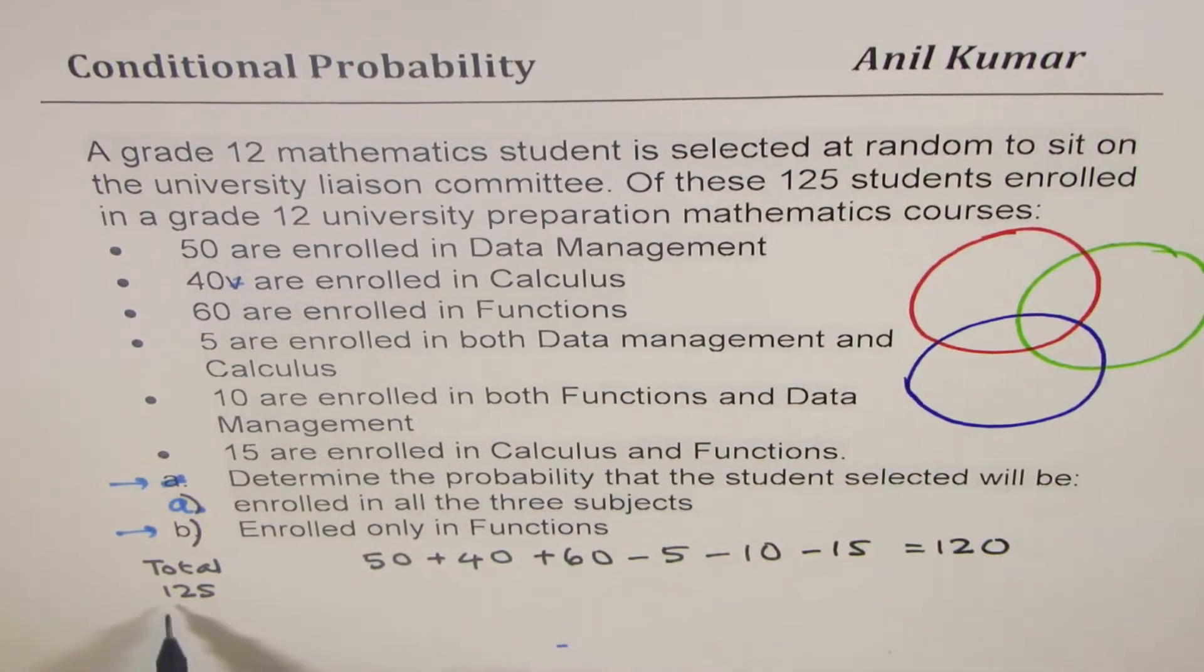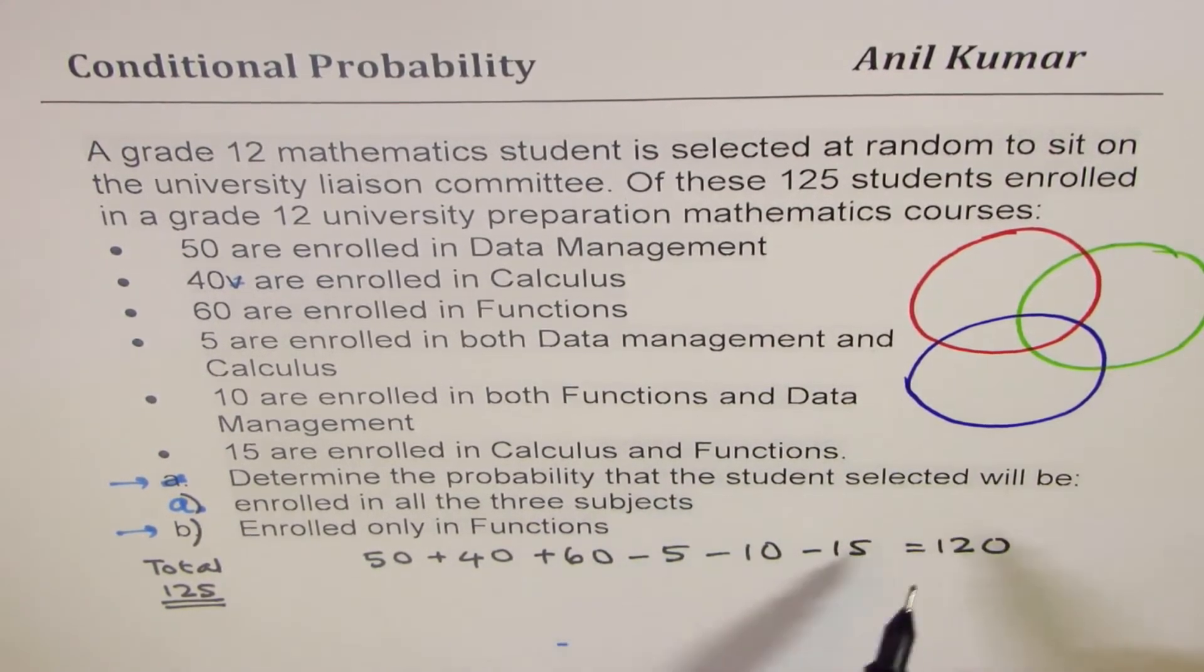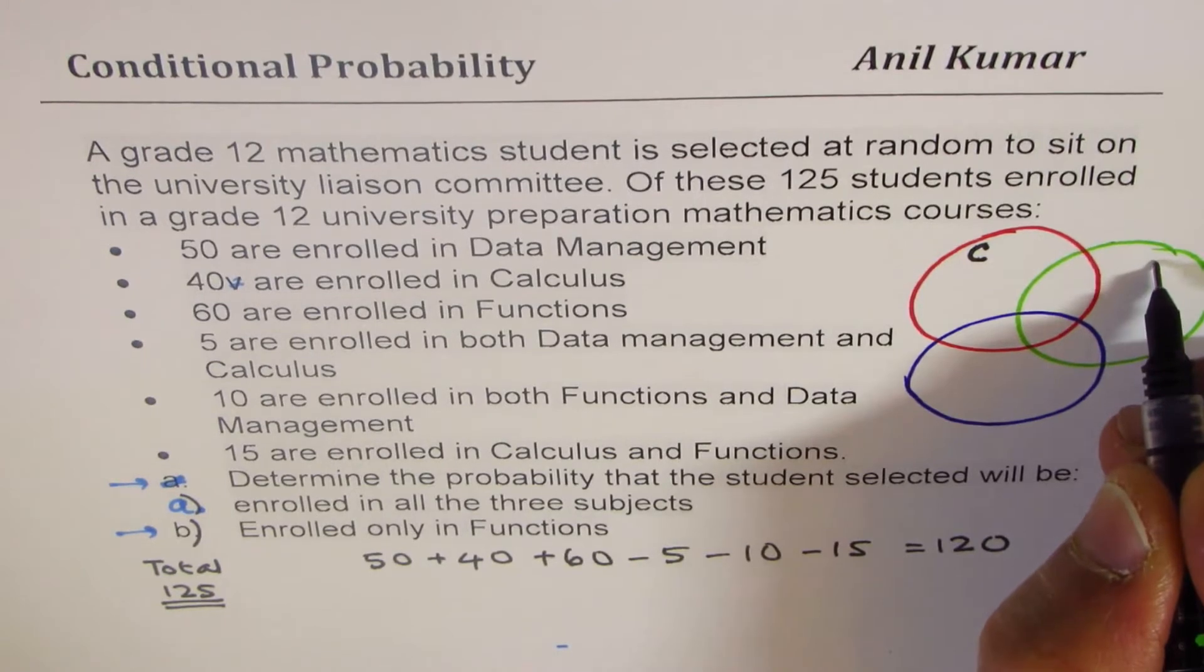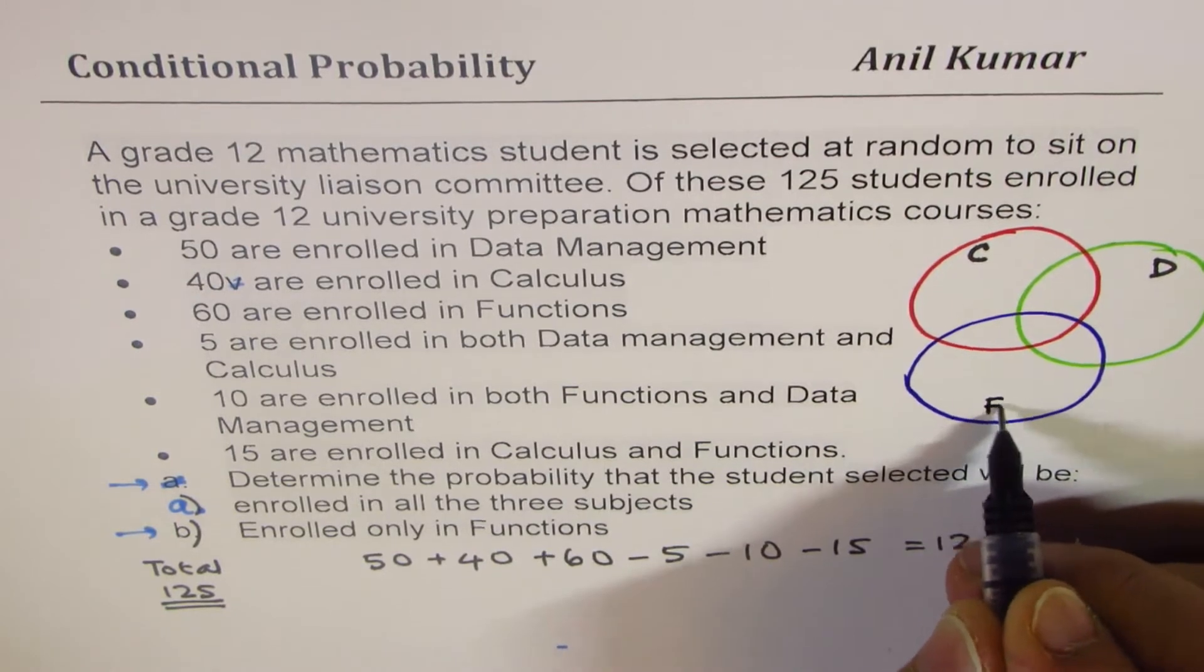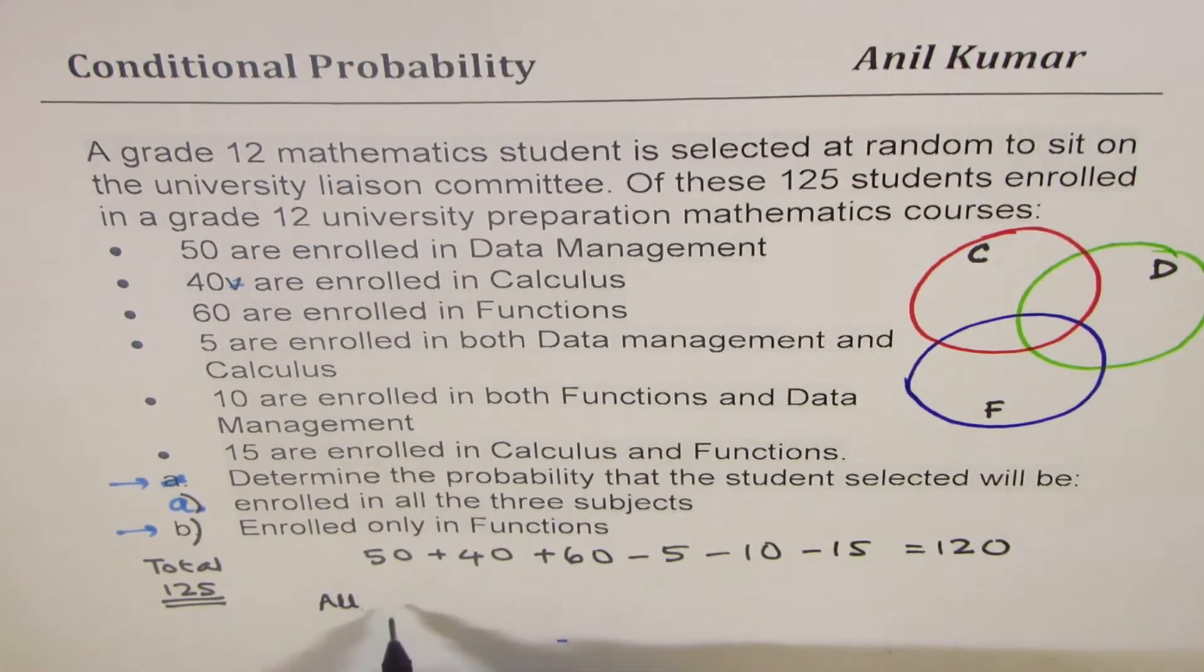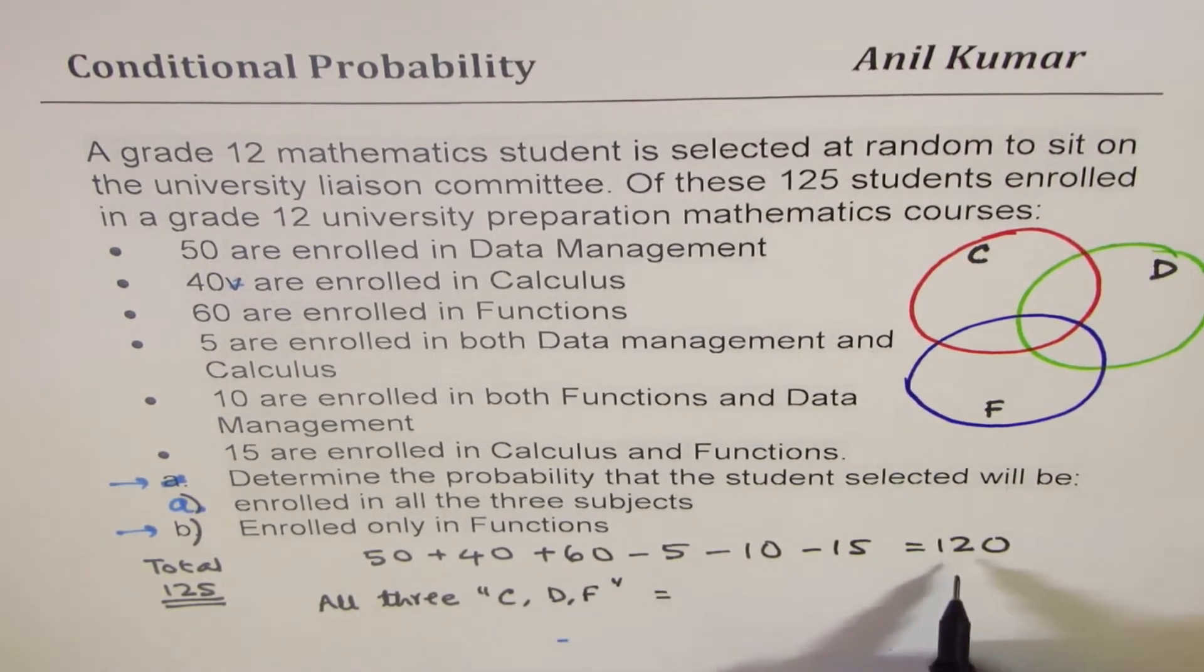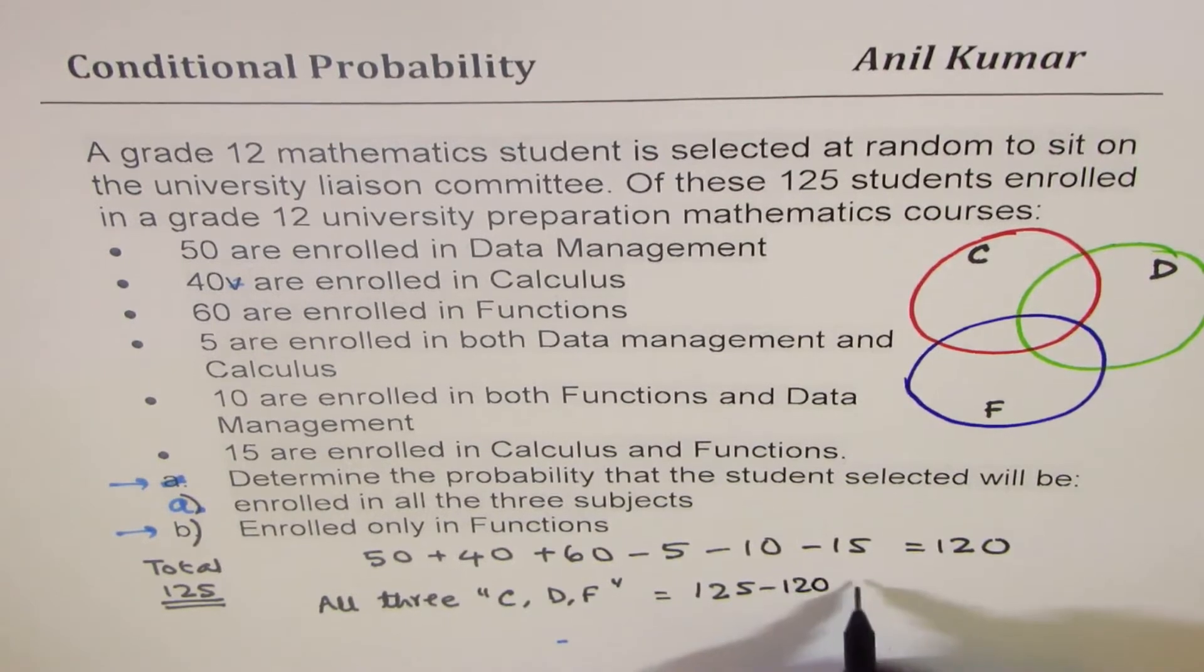That gives us 120, but we have 125 students. It means what? It means that the number of students who have taken all the three subjects. We are calling this as calculus, calling this as data management D, and this one as functions F. The number of students which have taken all three, that is calculus, data management, functions, are how many? 125 minus 120, which is 5.